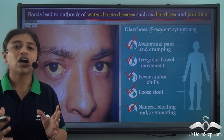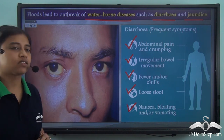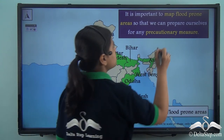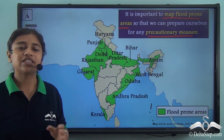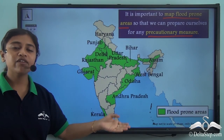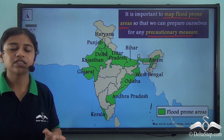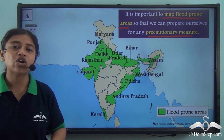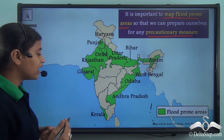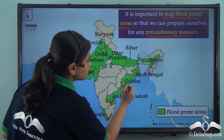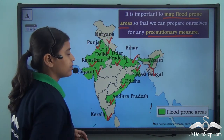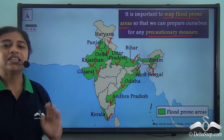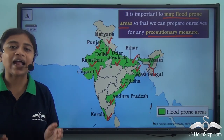Just like seismic zonation for earthquakes, flood-prone areas can also be mapped. States in India most vulnerable to floods include Kerala, Andhra Pradesh, Odisha, West Bengal, Assam, Bihar, Uttar Pradesh, Delhi, Haryana, Punjab, Rajasthan and Gujarat — most of them in coastal regions. Mapping flood-prone areas helps us prepare precautionary measures, as precaution is always better than cure.